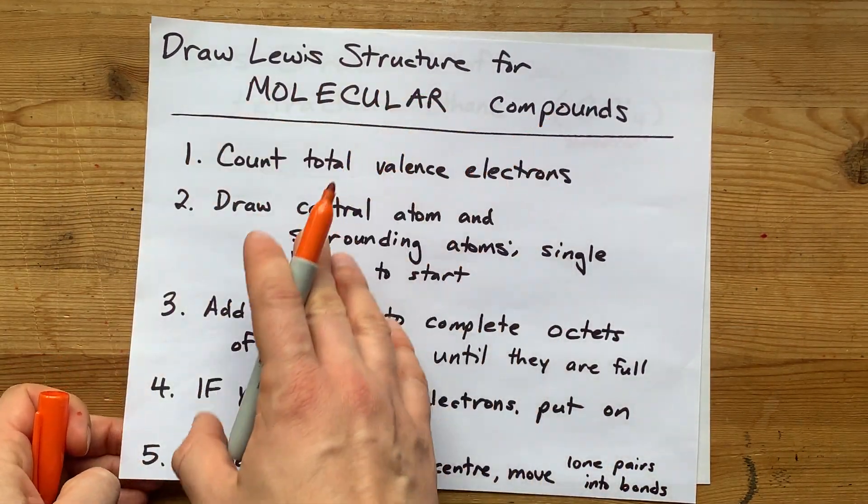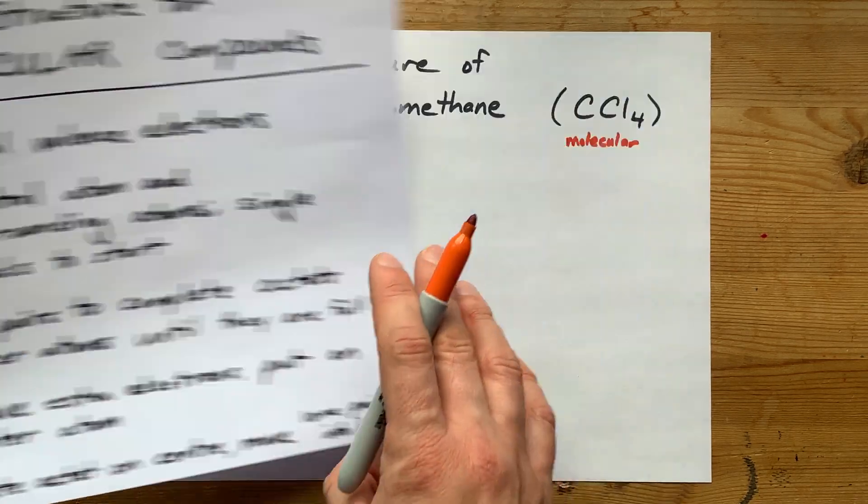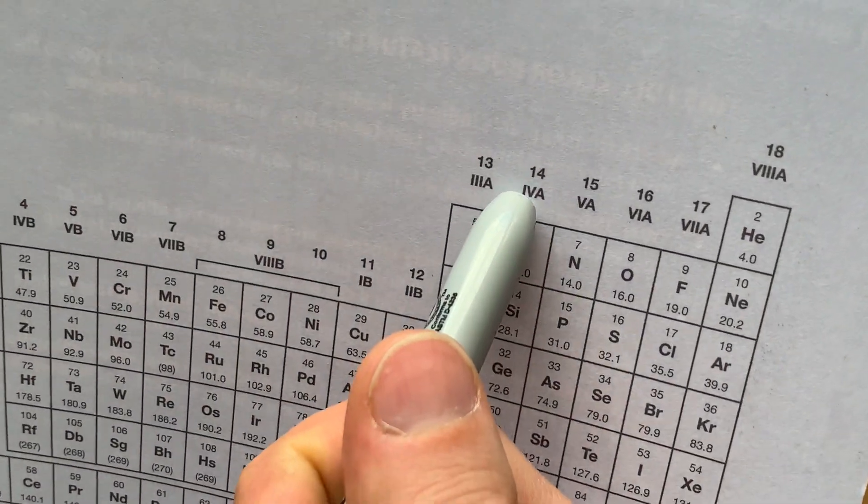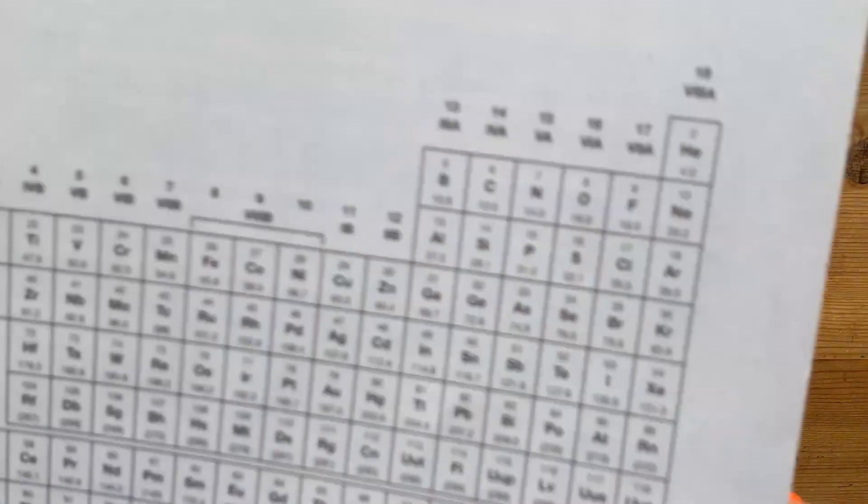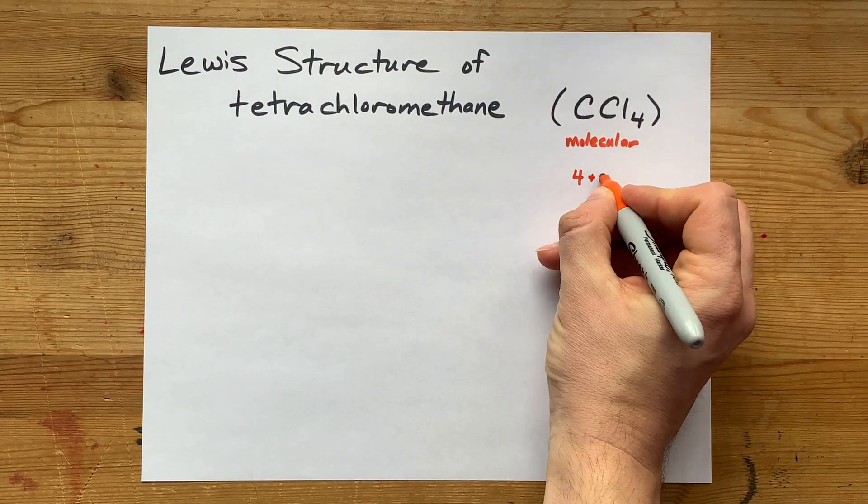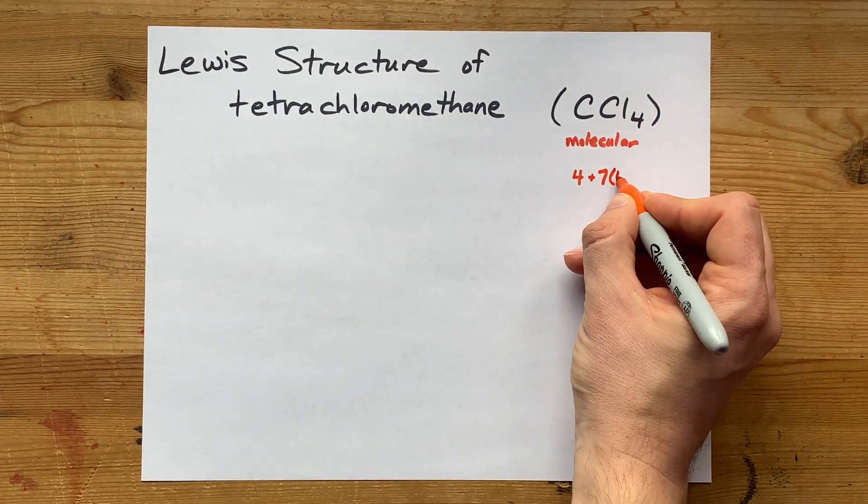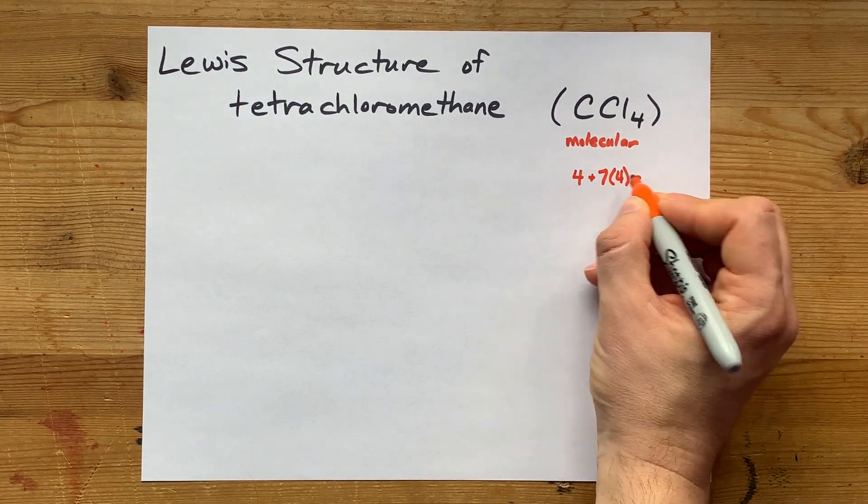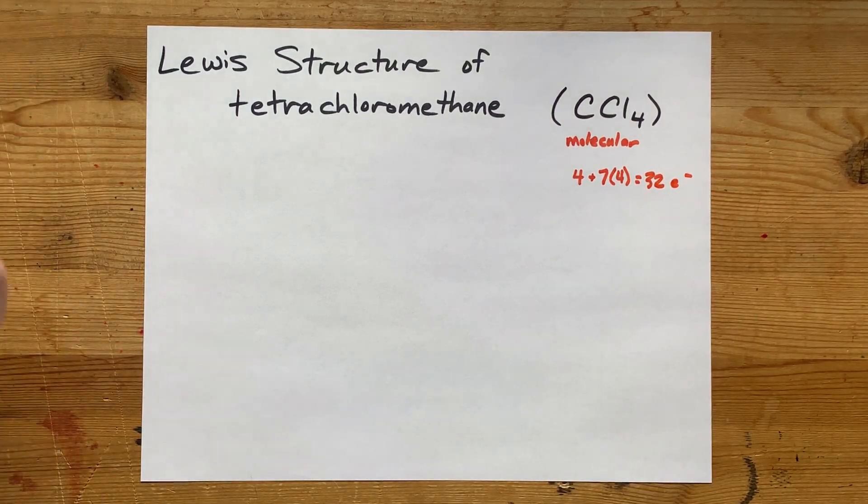To draw the Lewis structure for a molecular compound, count the total number of valence electrons that the atoms bring to start. Carbon in group 14 brings four valence electrons. Chlorine in group 17 brings seven valence electrons, but there are four of them. So that's four sevens and a four. 28 plus four is 32 electrons total. So far, so good.